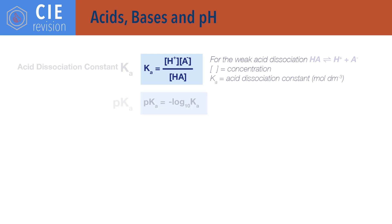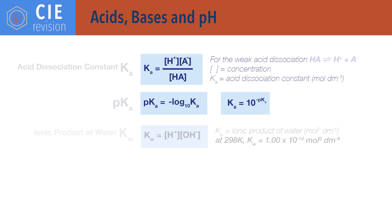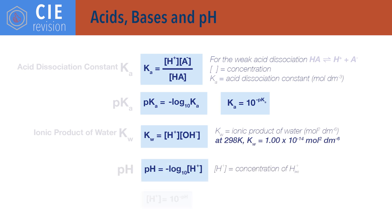pKa equals minus log to the base 10 of Ka, and Ka equals 10 to the minus pKa. Kw equals concentration of H⁺ ions times concentration of OH⁻ ions, where Kw is the ionic product of water with a value of 1 times 10 to the minus 14 at 298 kelvin. pH equals minus log to the base 10 of concentration of H⁺ ions, and concentration of H⁺ ions equals 10 to the power minus pH.